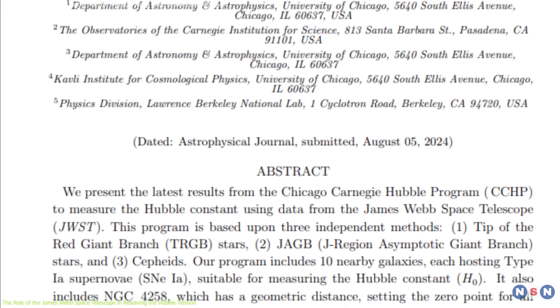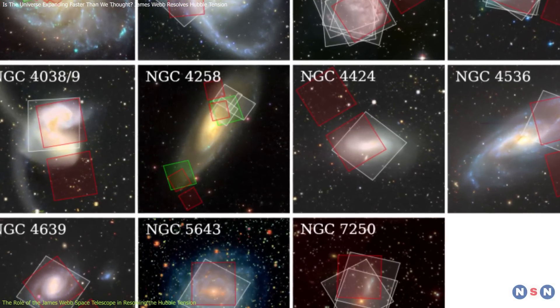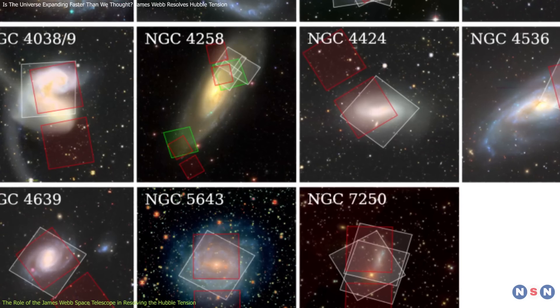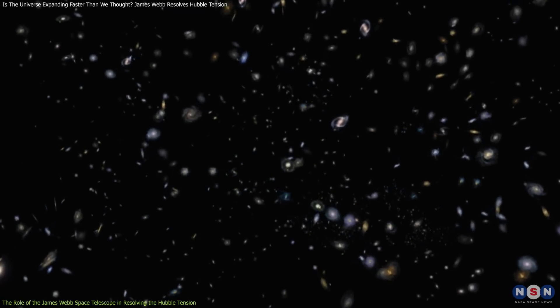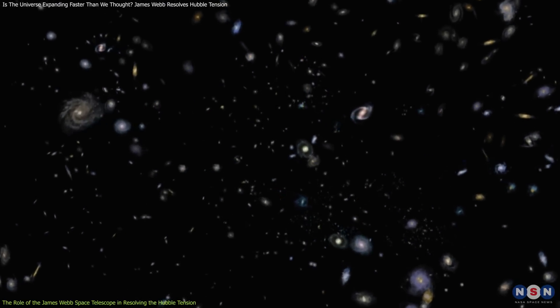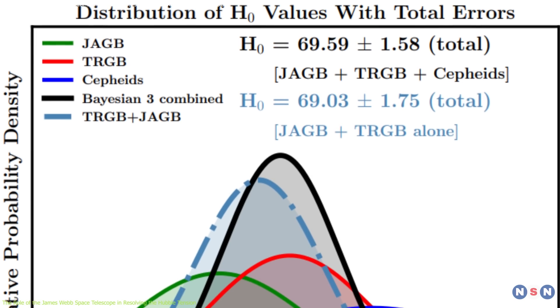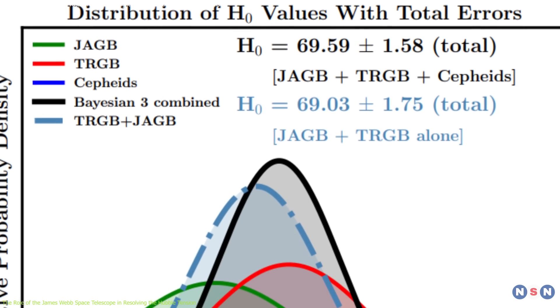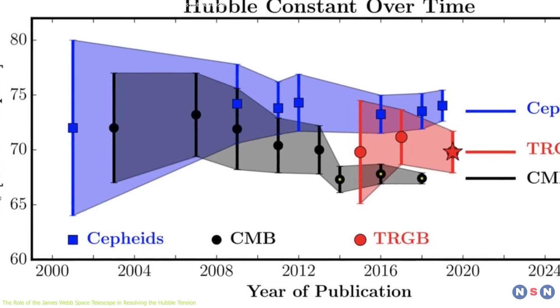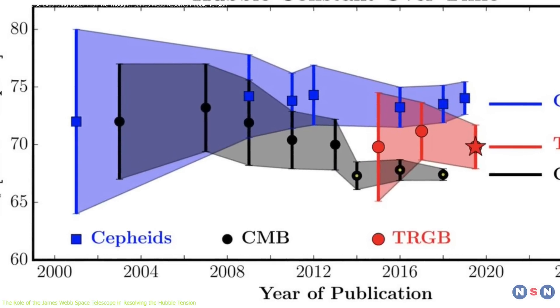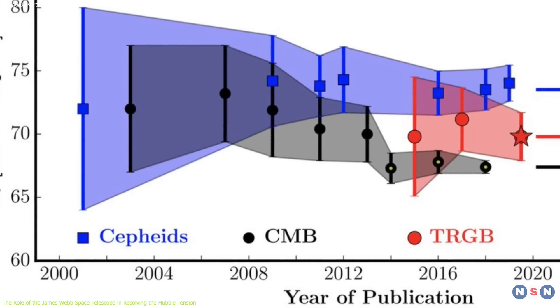What makes this study groundbreaking is the simultaneous application of all three methods within the same set of galaxies, which allowed for cross-verification of the results, reducing the likelihood of errors or biases that might affect the measurement of the Hubble constant. Remarkably, the values obtained from these different methods were consistent with each other and aligned closely with the CMB-based measurement of the Hubble constant, around 67.4 km per second per megaparsec.